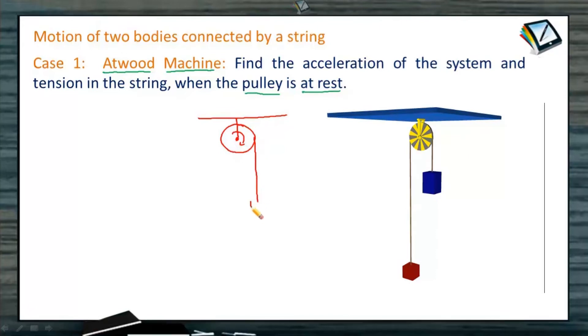Here, we have attached one mass. This mass, suppose I call M1 and here we have another mass. Let me call this mass as mass M2. Here, M1 is greater than M2. Therefore, this body is going to come down and this body is going to move up.